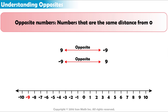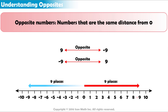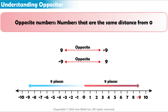The opposite of positive 9 is negative 9, and the opposite of negative 9 is positive 9. The sign of a number tells us its distance from zero, and the direction you travel is determined by the sign of that number. Both 9 and negative 9 are 9 places away from zero — positive 9 is 9 places to the right of zero and negative 9 is 9 places to the left of zero.